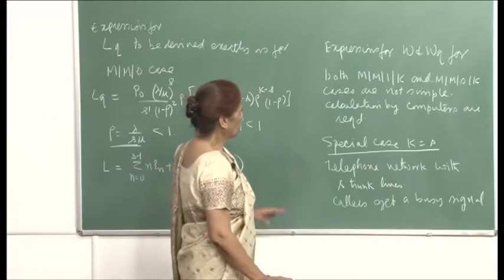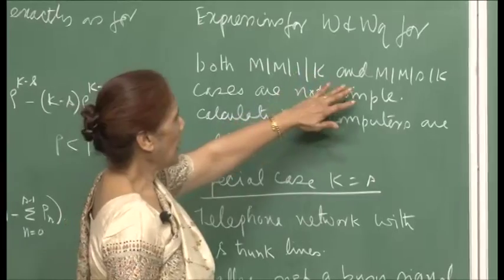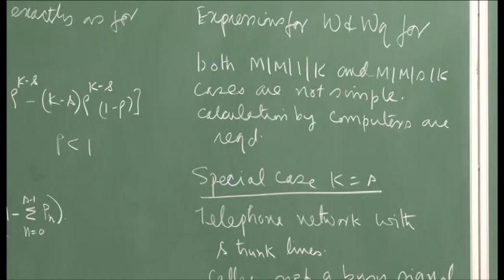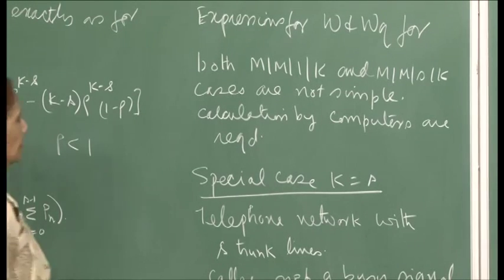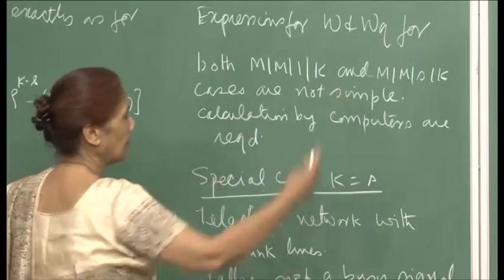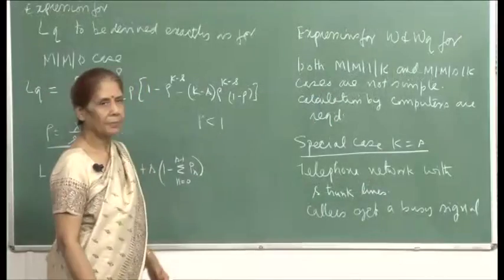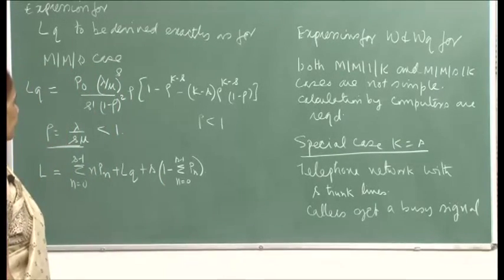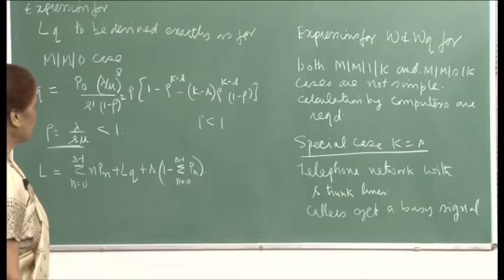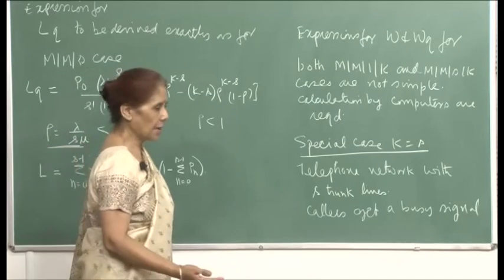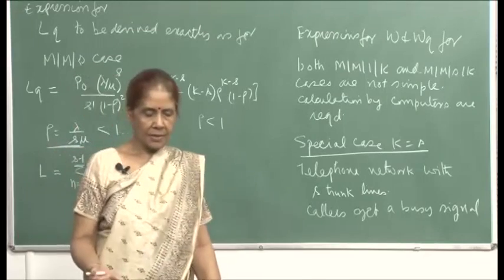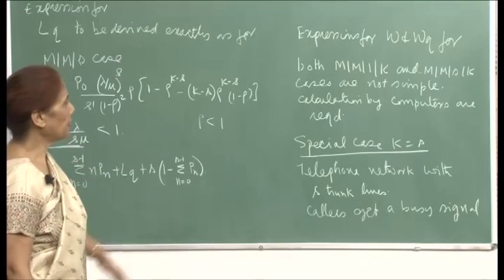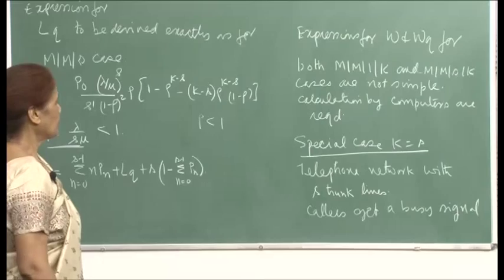Expressions for W and W_q for both MM1K and MMSK are not simple closed forms. We use computer calculations: given values of k, s, lambda, and mu, we write a small program to compute W and W_q. Some textbooks tabulate these values, just as we plotted graphs for the MMS case.